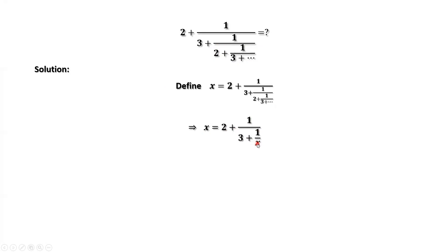Here, what is x here? That's 2 plus 1 over 3 plus 1 over... Now, the question is, how to solve this equation for x? It is not difficult. Let's simplify the denominator. We have 3x plus 1 divided by x. Continue to simplify this part. We have x equals 2 plus x over 3x plus 1.